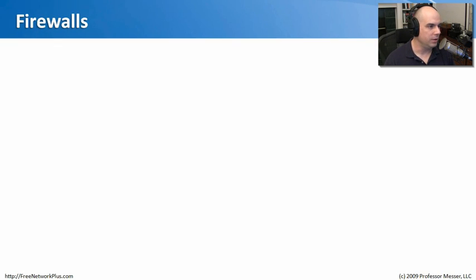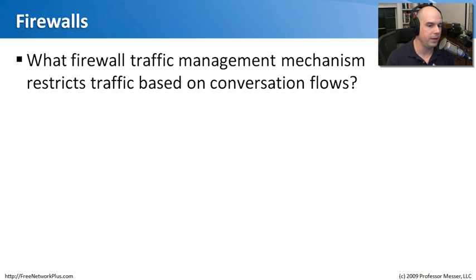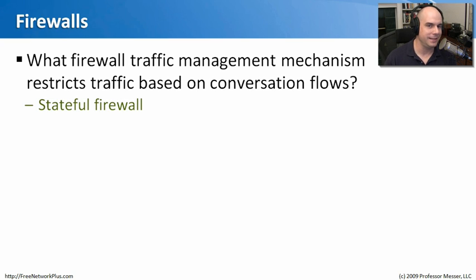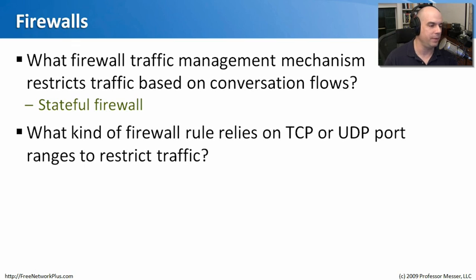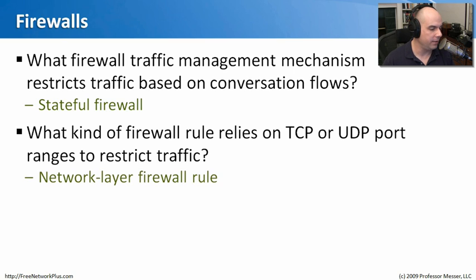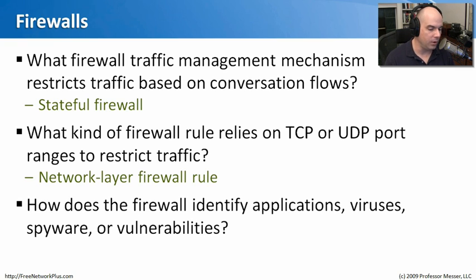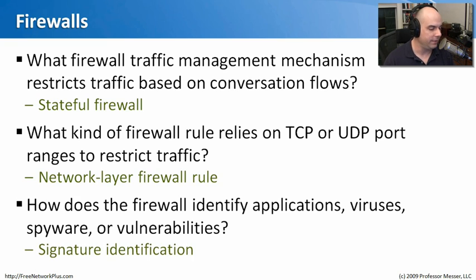Let's review what we've learned about firewalls. First question: what firewall traffic management mechanism restricts traffic based on the flow of a conversation? That's a stateful firewall — it remembers the state of flows and allows or disallows traffic based on that. Next: what kind of firewall rule relies on TCP or UDP port ranges to restrict traffic? That's a network layer firewall rule. And finally: how does a firewall identify applications, viruses, spyware, or vulnerabilities? Based on signatures inside the firewall.